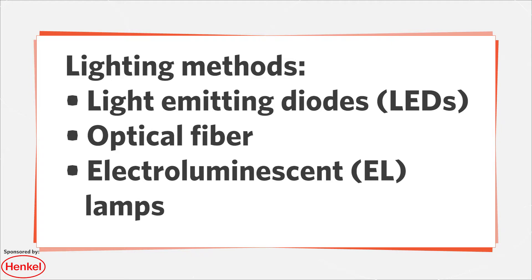EL lamps are cheaper than fiber optics and have a half-life of 3,000 to 8,000 hours. Their illuminating color depends on the phosphorus used.